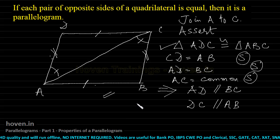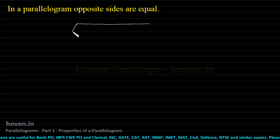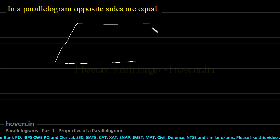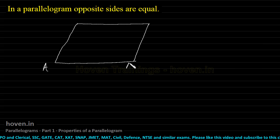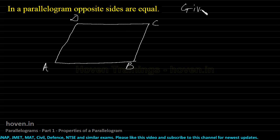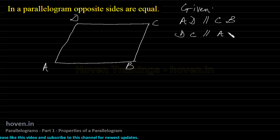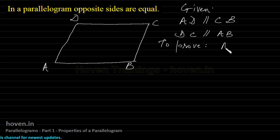Let us proceed to our next theorem. In a parallelogram, opposite sides are equal. We have been given a figure which is already a parallelogram ABCD. We have been given that AD is parallel to CB, and DC is parallel to AB. And we have to prove that AD is equal to BC, and DC is equal to AB.